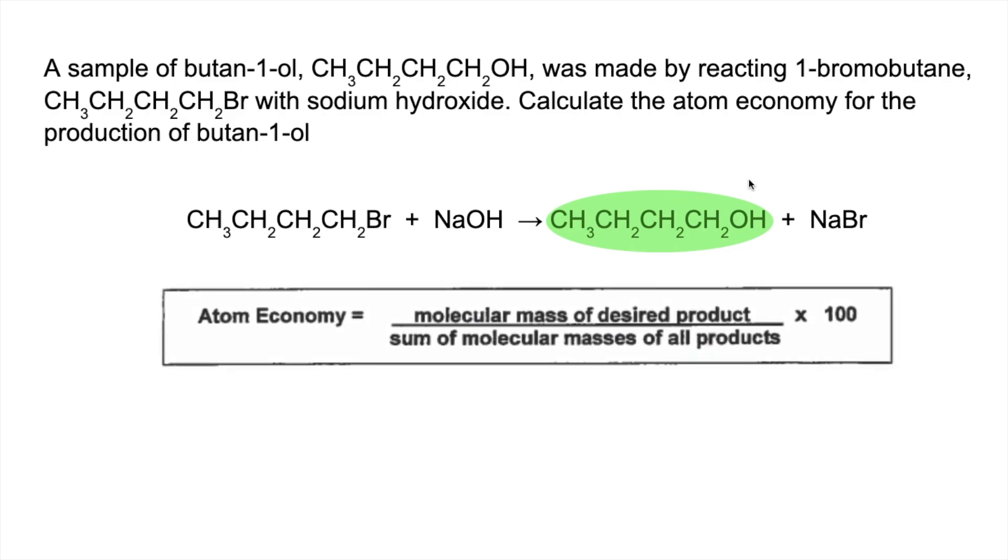So there's that formula again. So it is 74 is the mass of this, the MR of this. The MR of everything is 176.9 and then just multiply that by 100. And so we're getting an atom economy of 41.8% for that reaction.